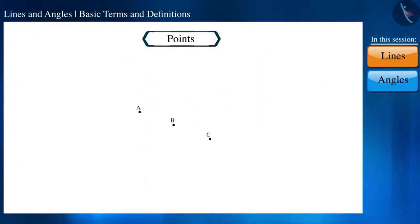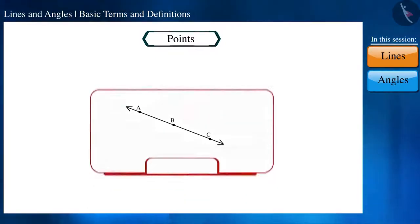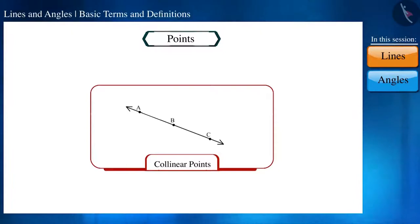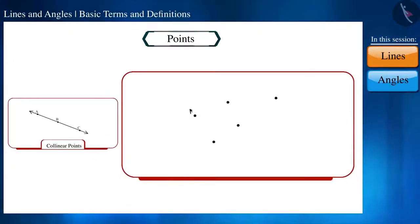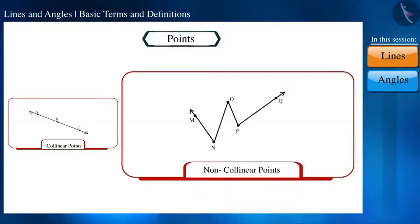Friends, if three or more points are situated on the same line, somewhat like this, then they are called collinear points. If they are not on the same line, they are called non-collinear points.